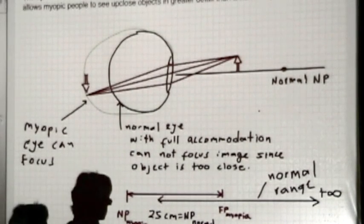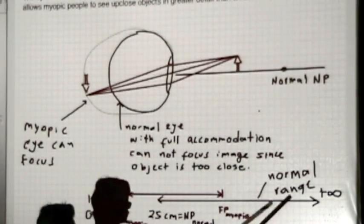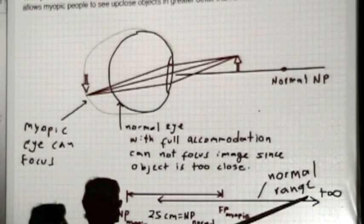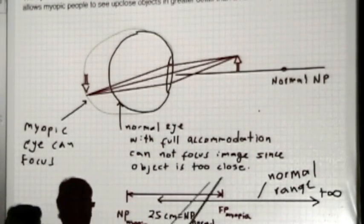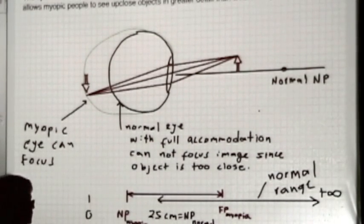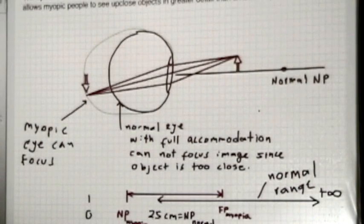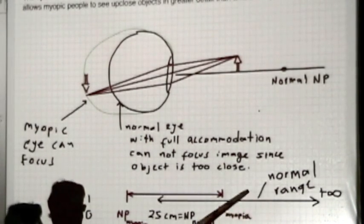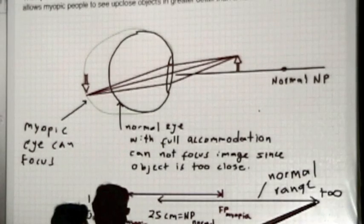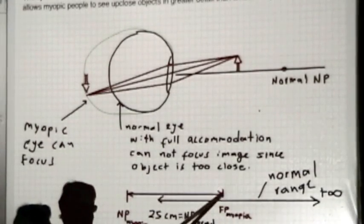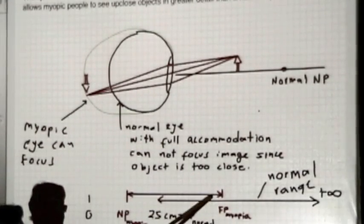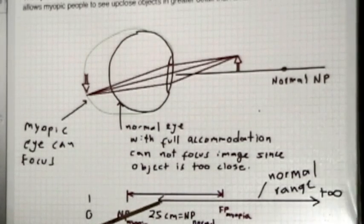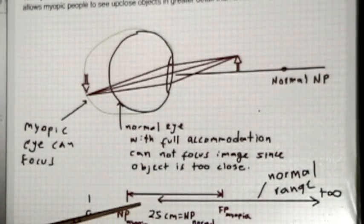The normal range of vision for a person is between infinity and 25 centimeters, which is the near point for a normal person. For a person with myopia, objects at infinity are too far, and there is a maximum distance called the far point somewhere closer. But that always comes together with an ability to focus on objects that are closer than 25 centimeters.